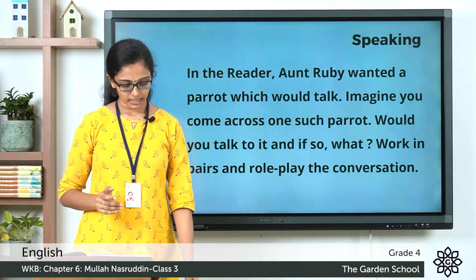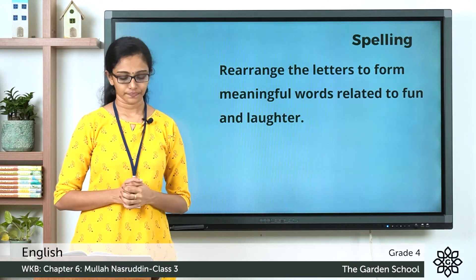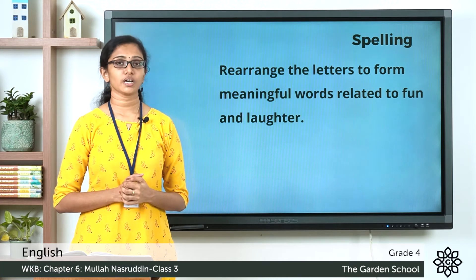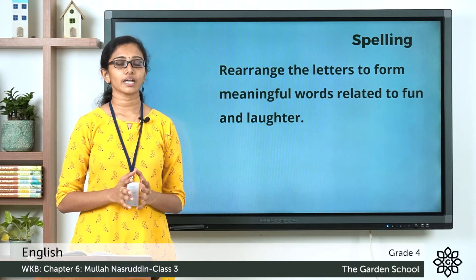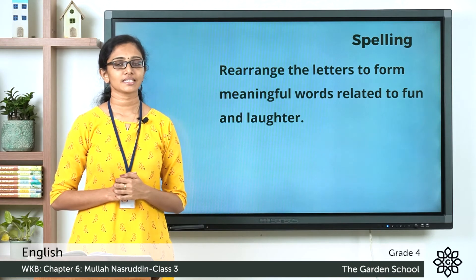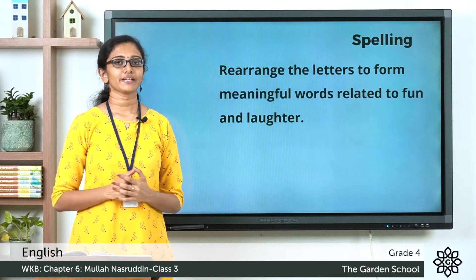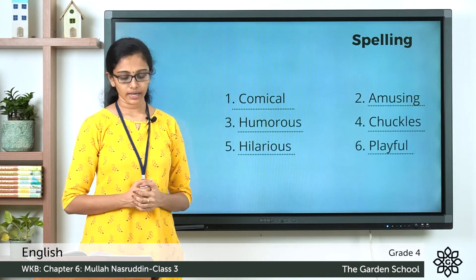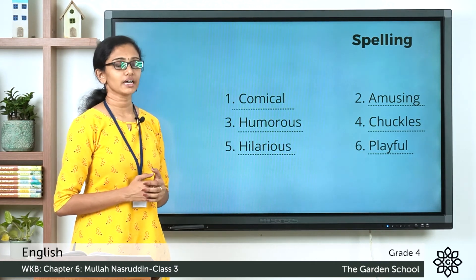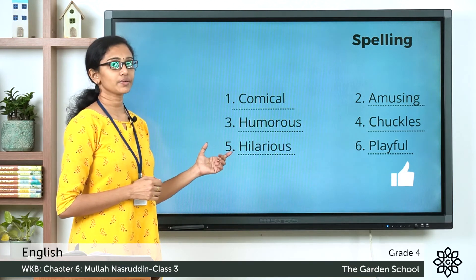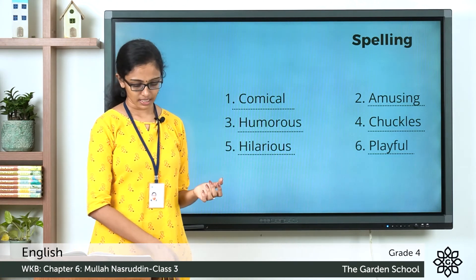Now let's see the next section about spellings. Rearrange the letters to form meaningful words related to fun and laughter. You can see six words with jumbled letters — unscramble them to form meaningful words. Please pause the video, finish the activity, and come back. Here are the answers: the first one is comical, the second amusing, the third humorous, the fourth chuckles, the fifth hilarious, and the sixth playful. I hope you got all the words correct.